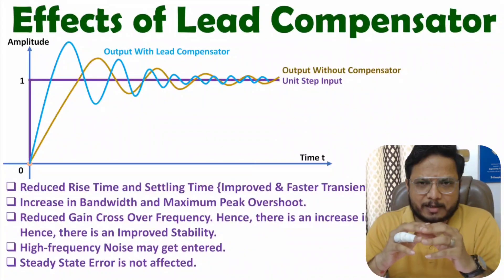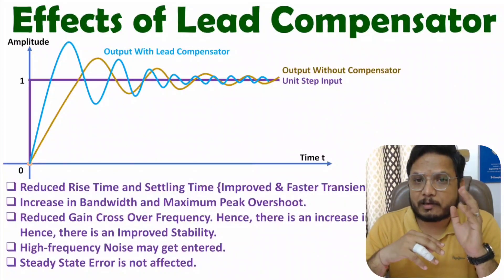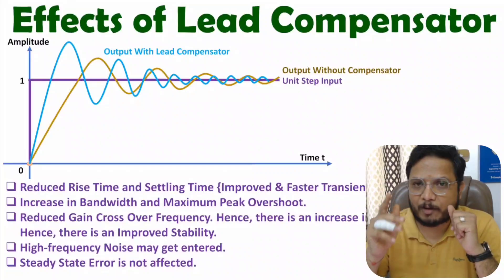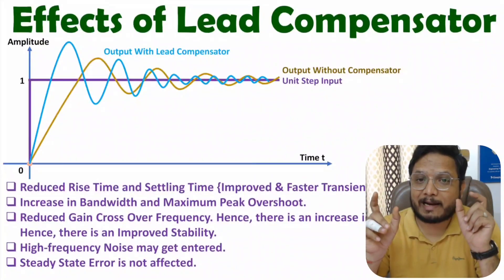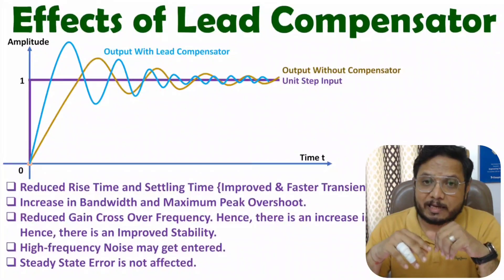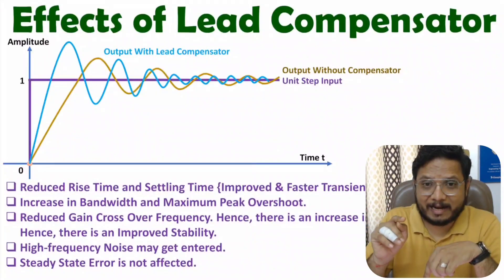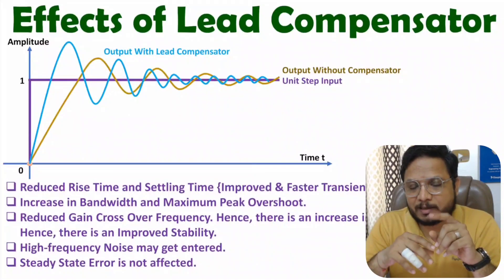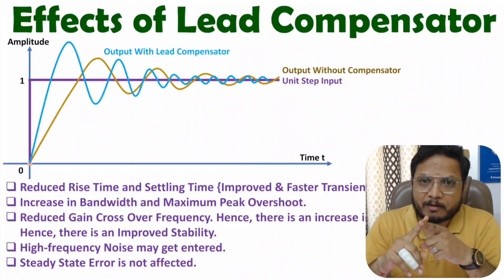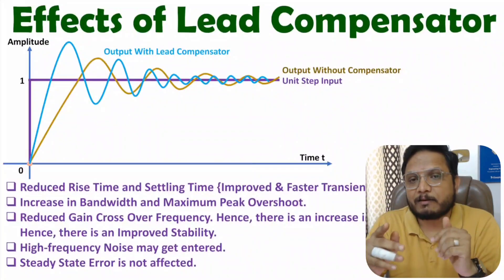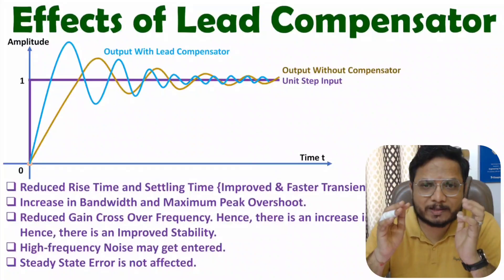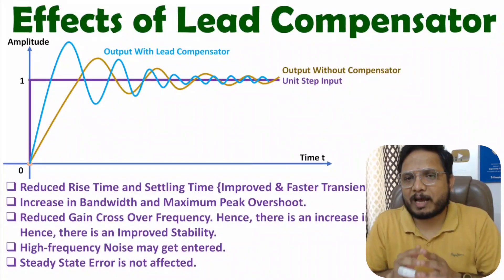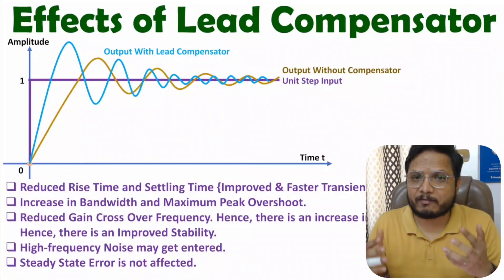So these are the basics you need to understand. With Lag Compensator, we have a response which is similar to a low pass filter response. With Lead Compensator, we have a response that is similar to a high pass filter response. Lead Compensator will increase bandwidth and Lag Compensator will decrease bandwidth. If we increase the bandwidth, high frequency noise may get entered inside the system due to Lead Compensator, while Lag Compensator will eliminate high frequency noise. With Lead Compensator we have faster transient response characteristics, while with Lag Compensator we have slower transient response characteristics. Based on the requirement, we add Lead and Lag Compensators accordingly.